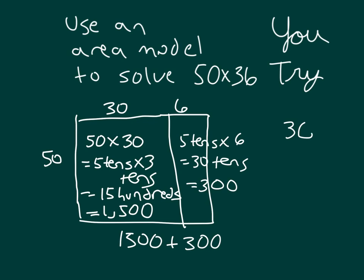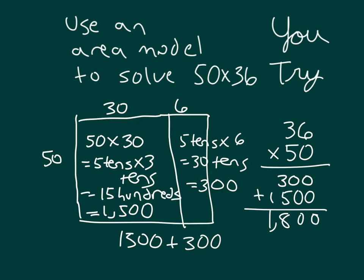The other way that we can write that is as follows. We have 36 times 50. And so this is something new that you haven't seen yet, where we're looking at 6 fifties, which was the 300. And then we're looking at 30 fifties, which was the 1,500. And in adding those together, I get 1,800. So here's our area model to solve 50 times 36, and our answer is 1,800.